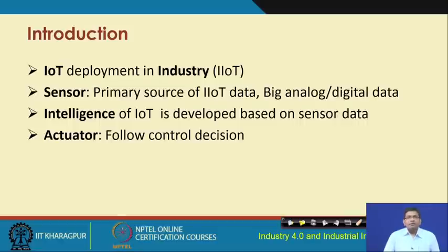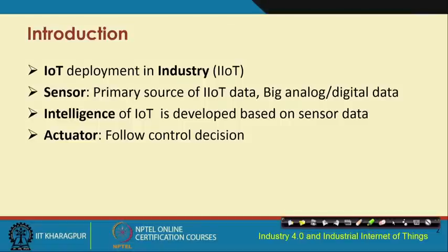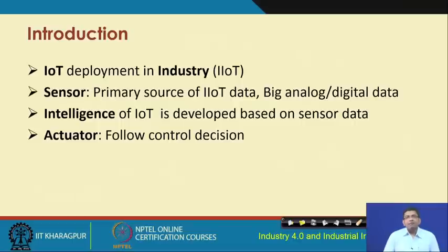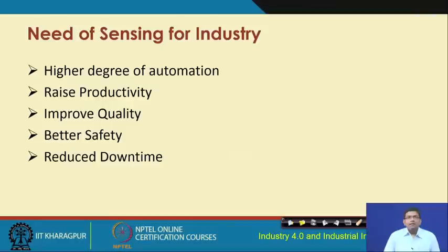The data collected by the sensors will have to be powered with intelligence. These data will have to be processed in order to get information and knowledge out of them, and following that processing and analysis done from the data collected in real time, in typical scenarios some real-time actuation can also be done - and this actuation can be done following control decisions. There is a need for sensing in the industry, and the sensors used should help in promoting a higher degree of automation, raising productivity, improving quality of products and processes, improving overall safety, and reducing the downtime of machinery.